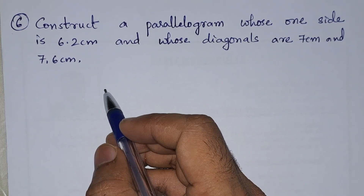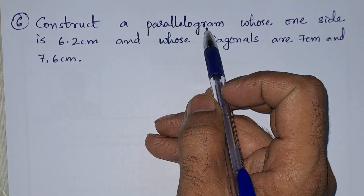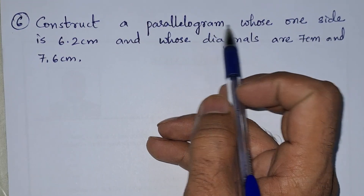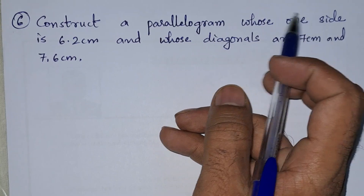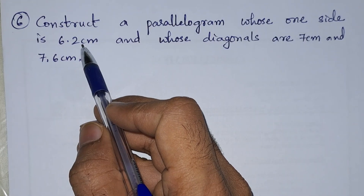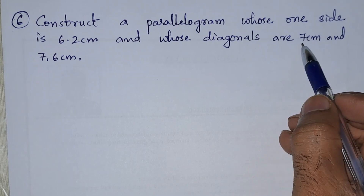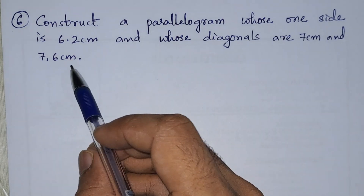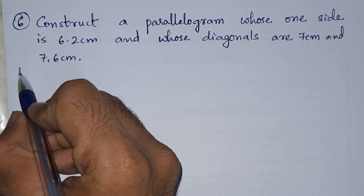Sixth problem: construct a parallelogram whose one side is 6.2 centimeters and whose diagonals are 7 centimeters and 7.6 centimeters.